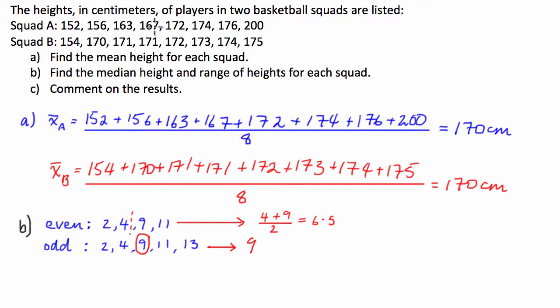Let's have a look for our two data sets. We've got 1, 2, 3, 4, 5, 6, 7, 8. So it's going to be in between the 4th and the 5th number. For both data sets, the median should lie there. For squad A, the median is going to be halfway between 167 and 172. So we have 167 plus 172 on 2, and that's equal to 169.5 centimeters. Again, guys, make sure our units are in there.